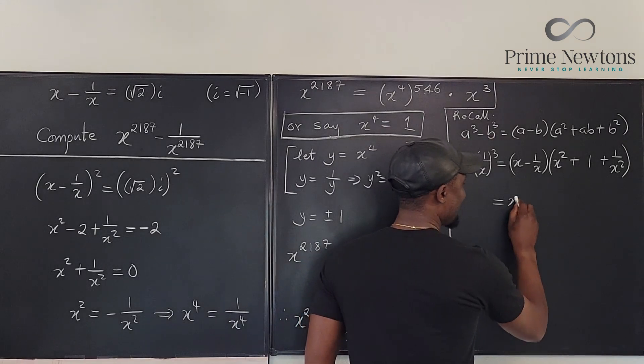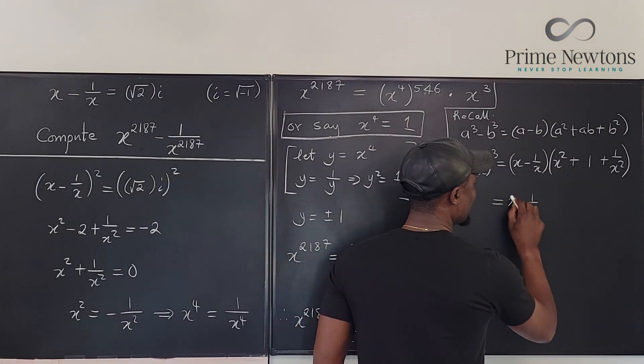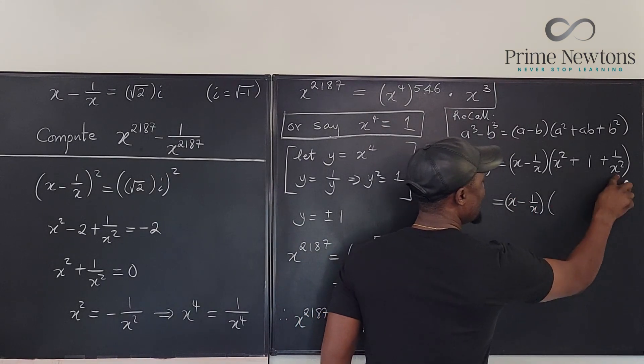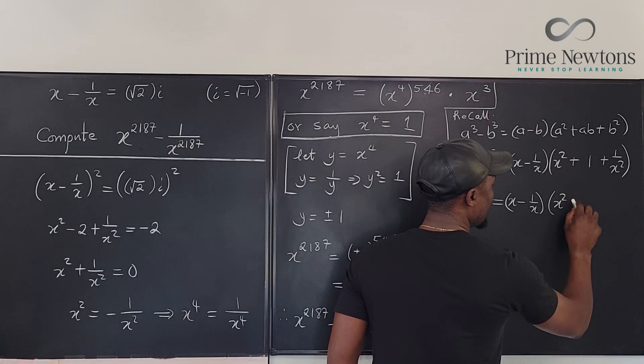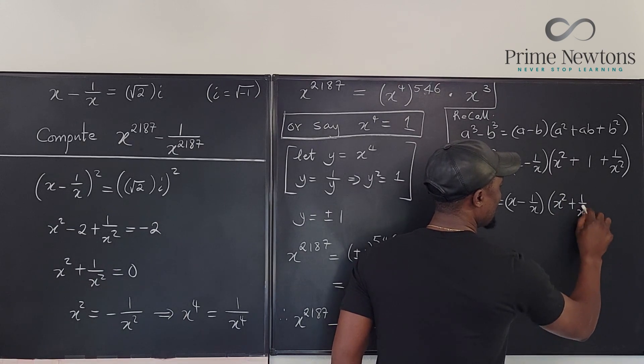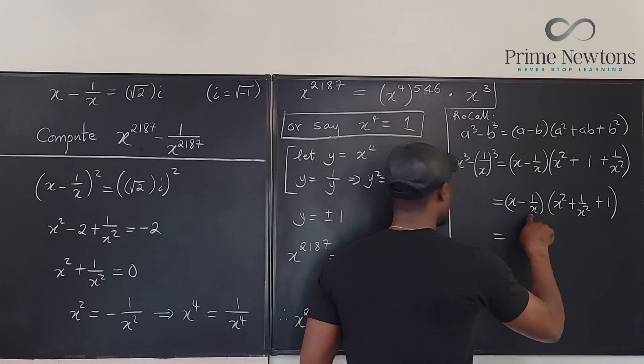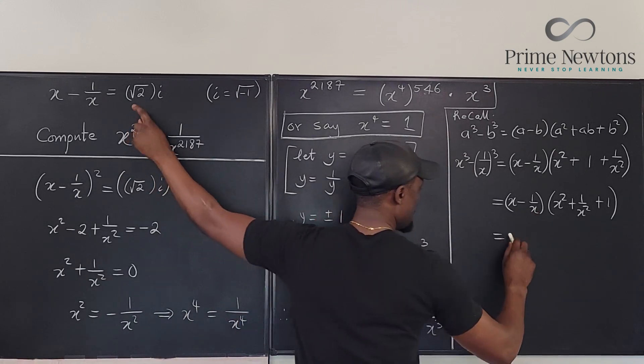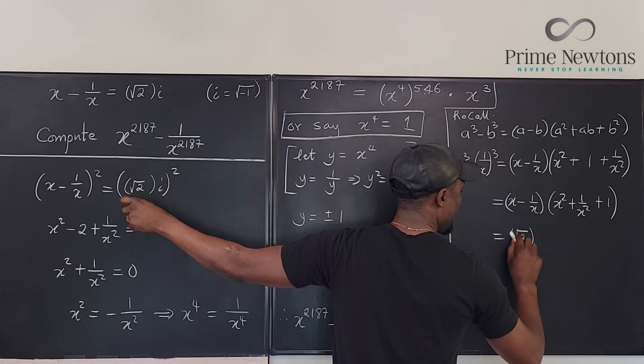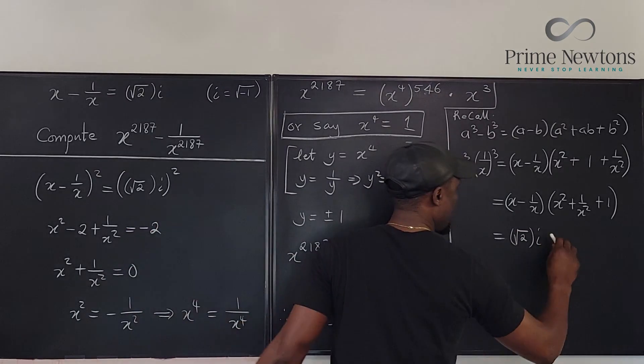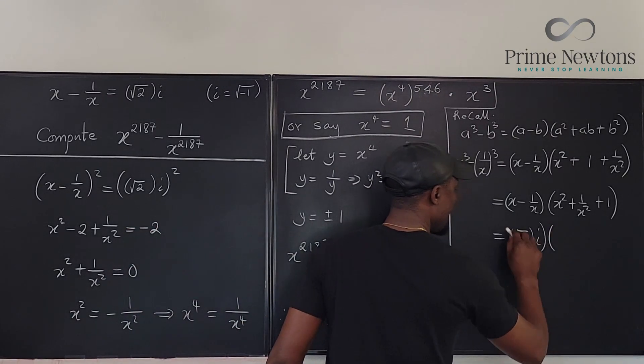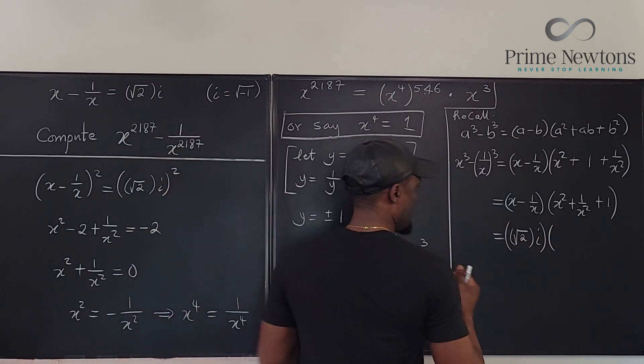Actually, let's rewrite it. This is (x minus 1 over x) times—if you put these two together, it's going to be x squared plus 1 over x squared plus 1 over x squared, and then you have plus 1. Nice. This is the original problem, which is the square root of 2i, multiplied by x squared plus 1 over x squared.